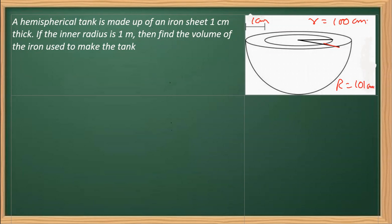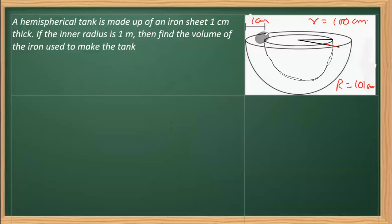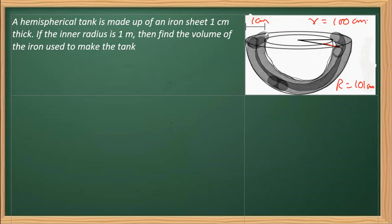Once we have this, we need to find the volume. Looking at the figure clearly, if we subtract the inside hemisphere from the outside hemisphere, we get the volume of the material used. The volume occupying this part — the portion where the material is used in making — is found by removing the inside volume from the outside. That gives us the volume of material used in making this tank.